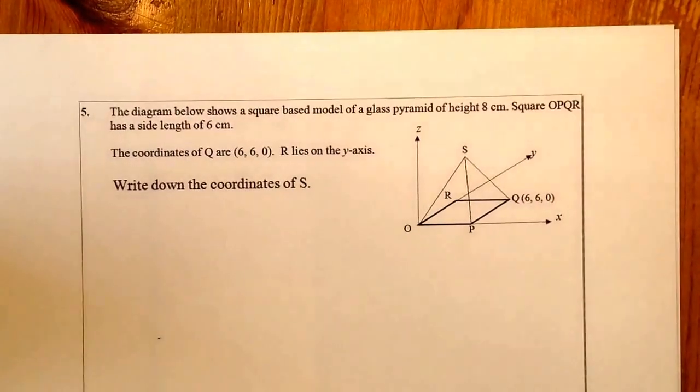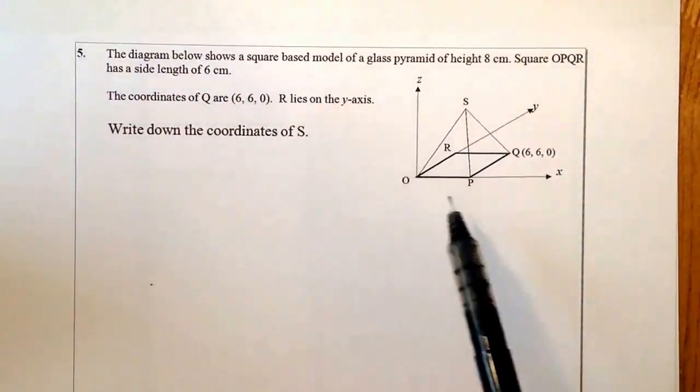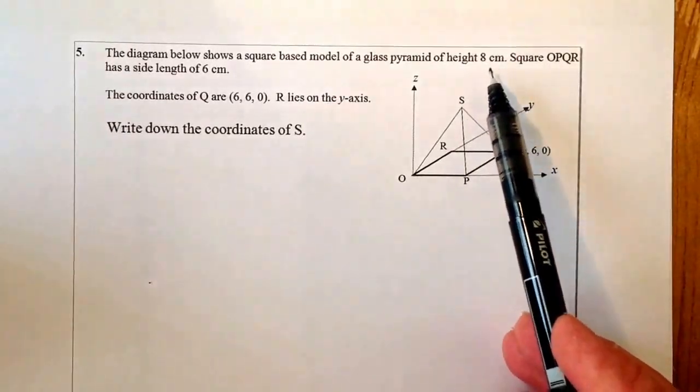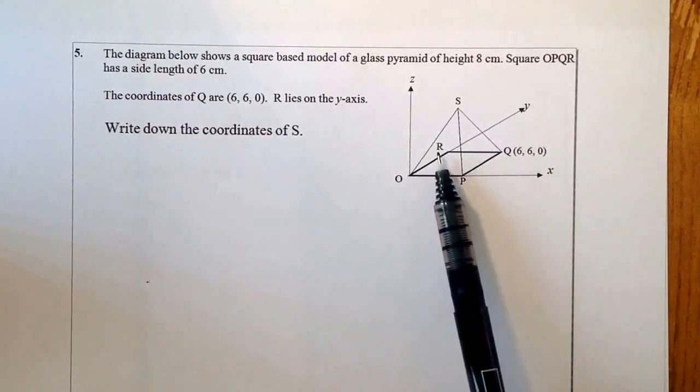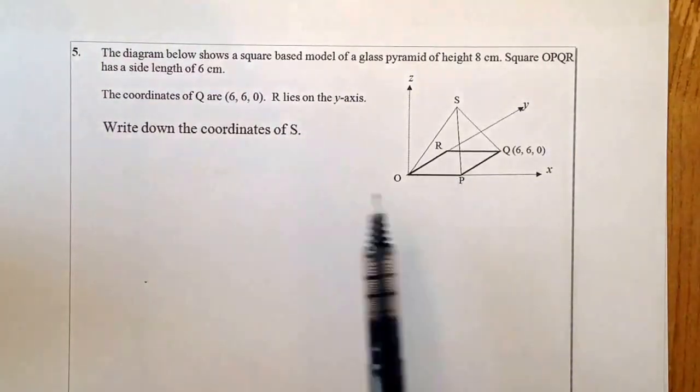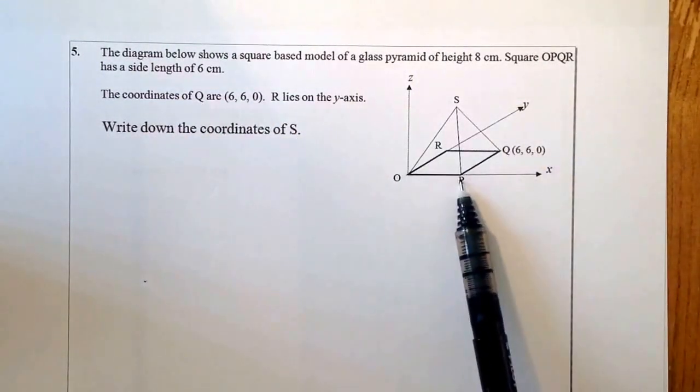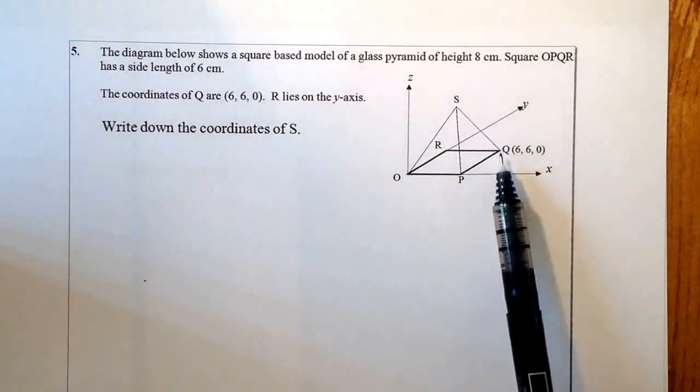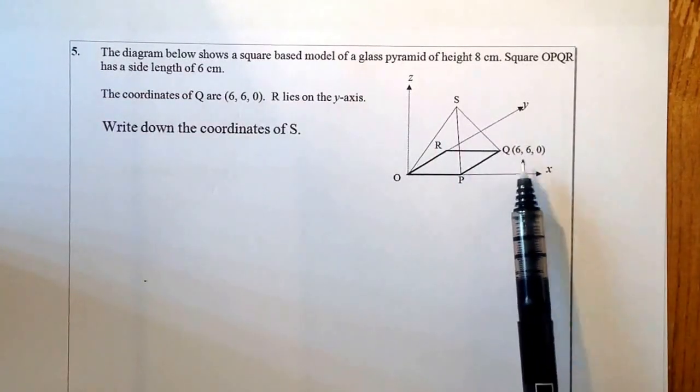So on to question 5. What we have here is we have a diagram of a square based glass pyramid. The height of the pyramid is 8. And that's going to be important for me. The square OPQR has a side length of 6. So I know from there to there it's going to be 6. The coordinates of Q are 6, 6, 0. So here we go. 6 along, 6 back the way in the Y direction, and 0 in the height, 0 in Z direction there. So X, Y, and Z direction for Q.